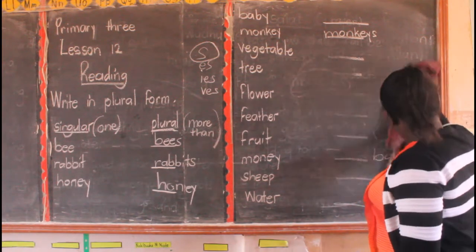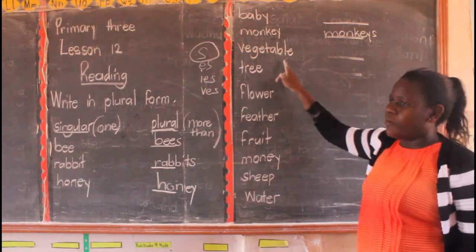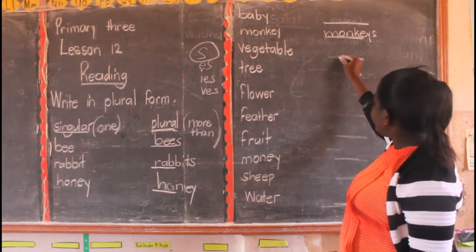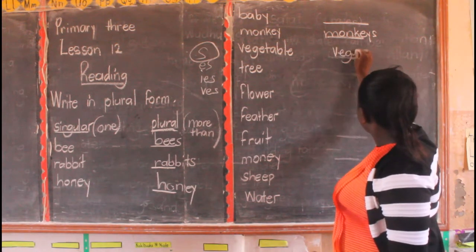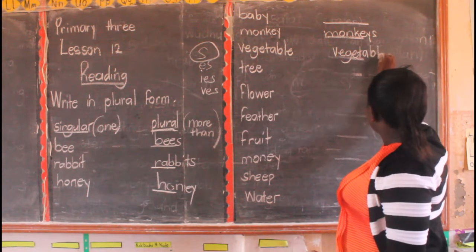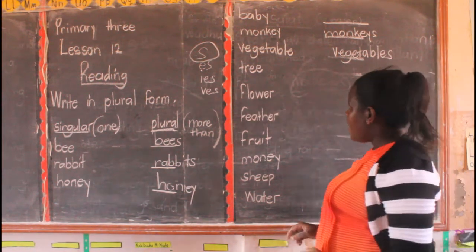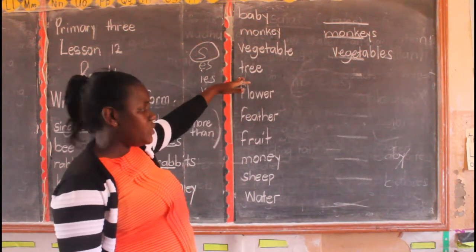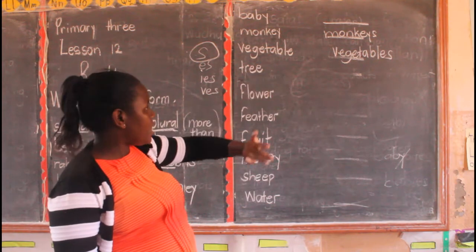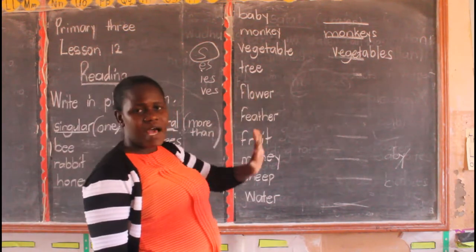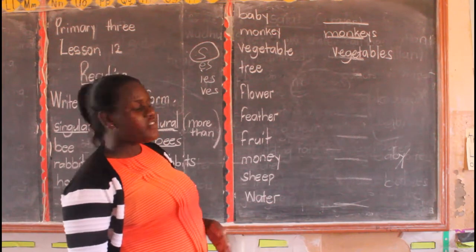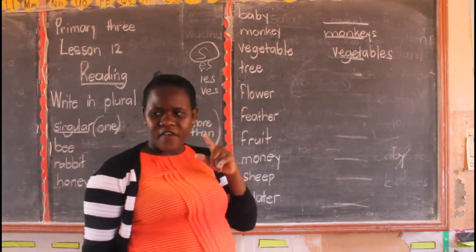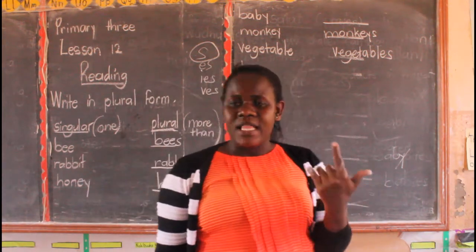Let's move on. We have vegetable — the plural form is vegetables. You add S. We have tree — the plural is trees. Flower: one flower, if there are many, they become flowers. What about feather? If it is one, it is a feather. If there are many, they are feathers.